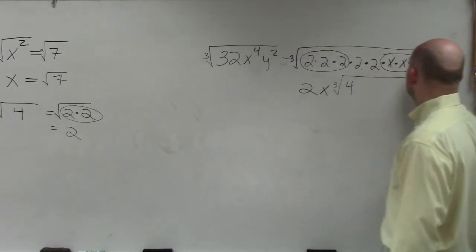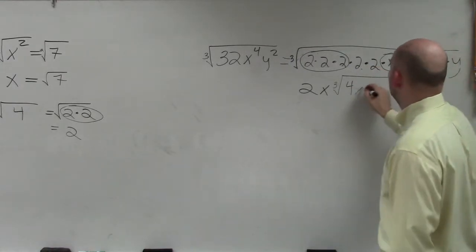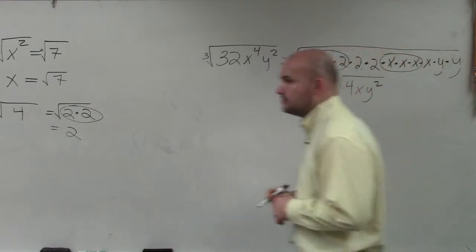So I have 2 times 2, which is 4, x, y squared. And that would be your final answer.